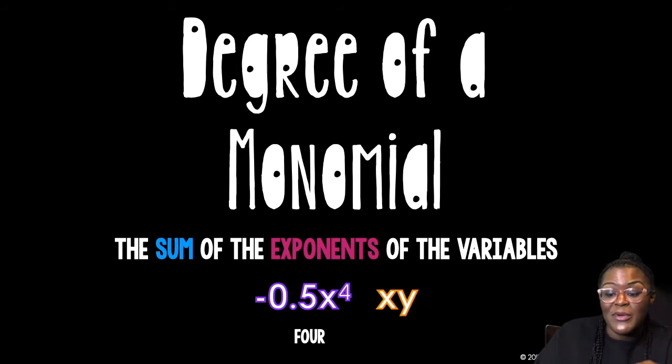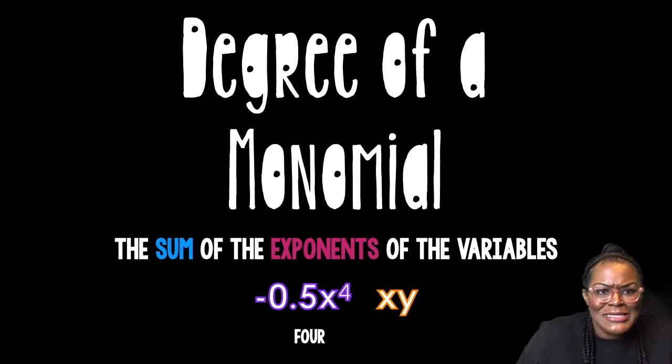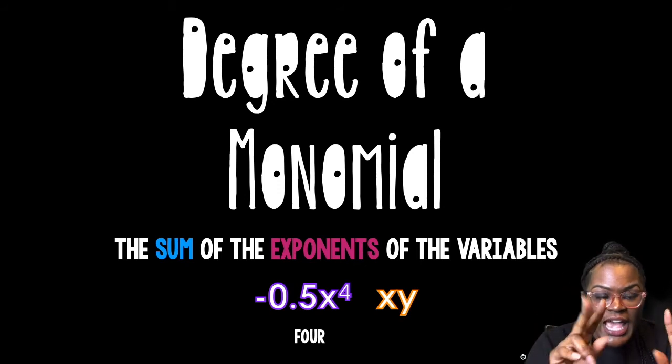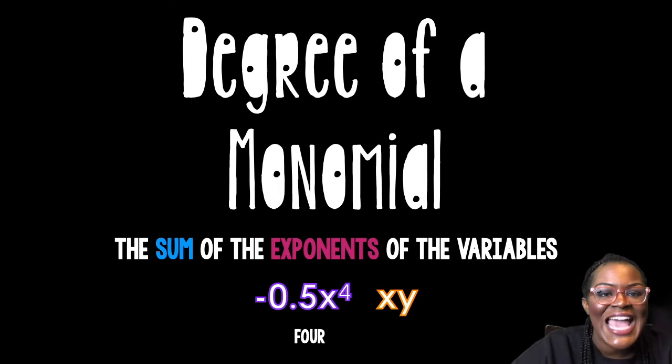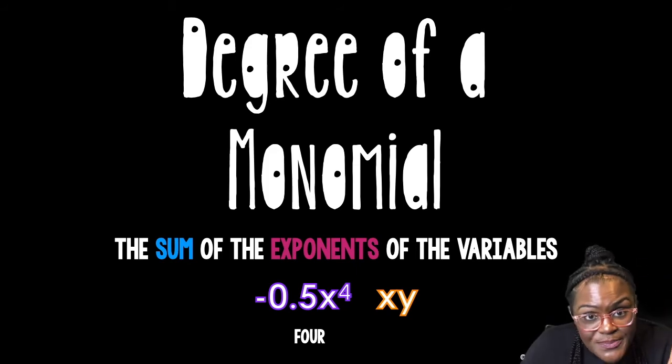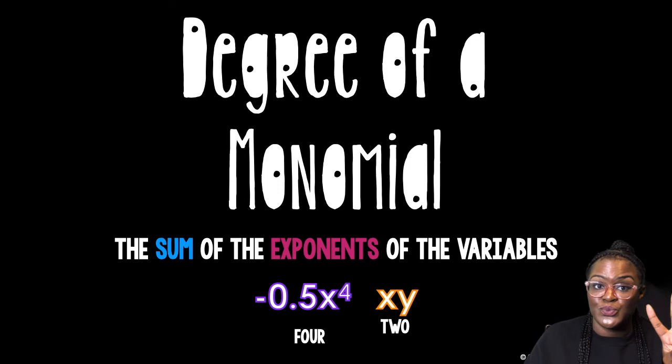X times y. Remember, it is the sum. The sum of the exponents on each variable. I have two variables. And you're like, oh my gosh, but there's no exponents. Yes, every variable has an exponent. When it's not there, it is a 1. So x to the first power times y to the first power. 1 plus 1 equals 2.